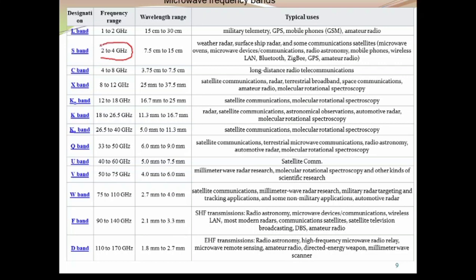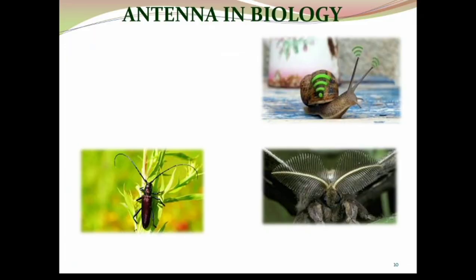The S band is used for all commercial, mobile, and internet applications. Then we have C band, used for long distance radio communications. X band frequencies, higher than C band, are 8 to 12 gigahertz. Students will most probably use X band frequencies in the laboratory. The microwave frequency is further classified into Ku band, Ka band, and other higher bands.